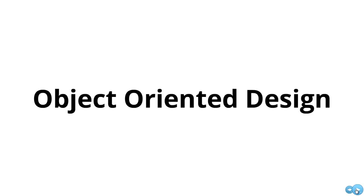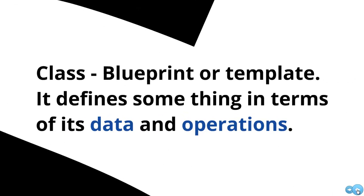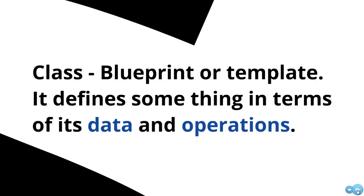When we think about object-oriented design, we're really thinking about being able to model some sort of complex, or potentially complex, system in terms of some objects, and these objects can really describe anything. These objects can also interact with one another. One of the main things we need to understand is this idea of what is an object and what is a class. A class is just simply a blueprint or a template — it's defining something in terms of data and operations.